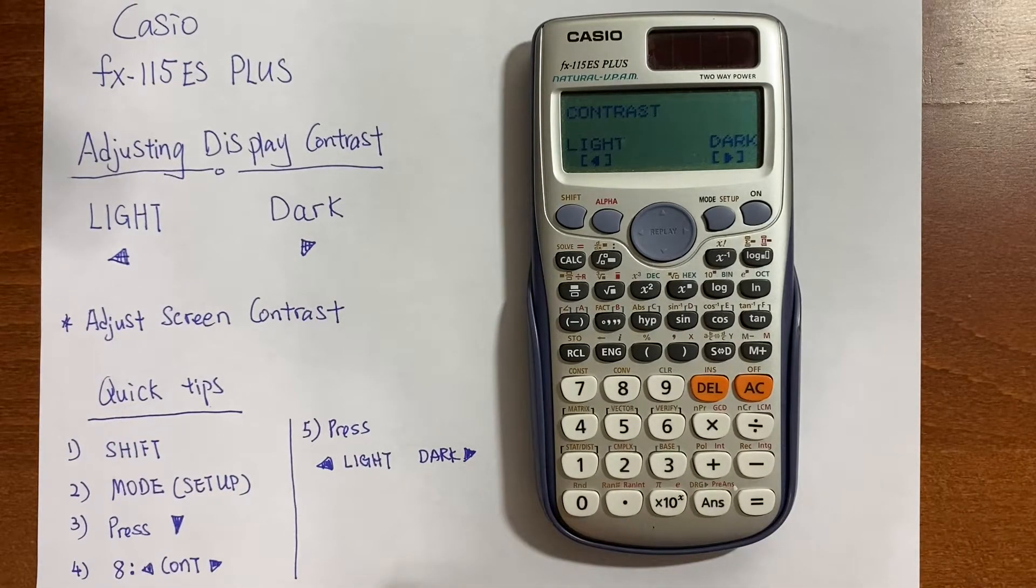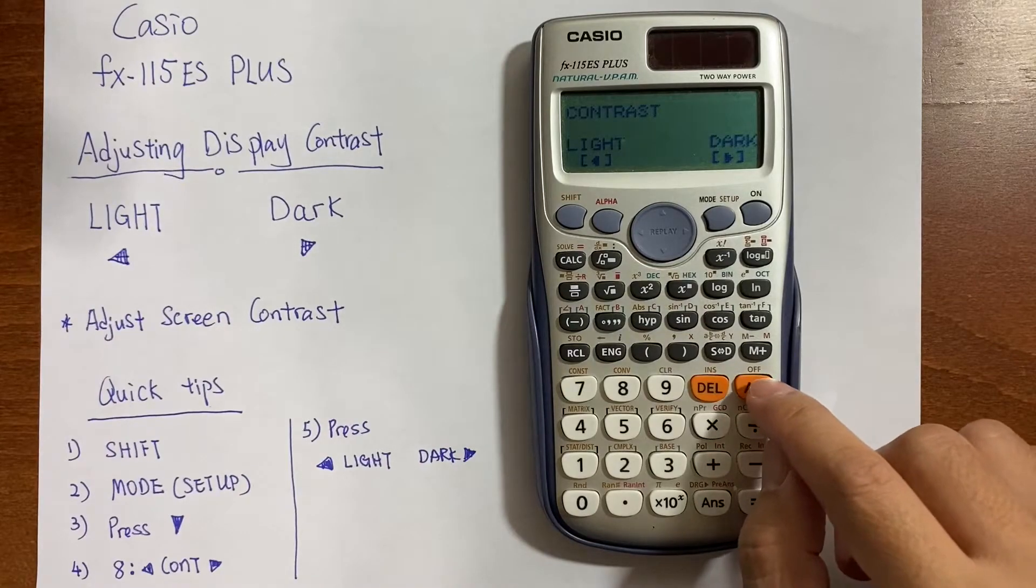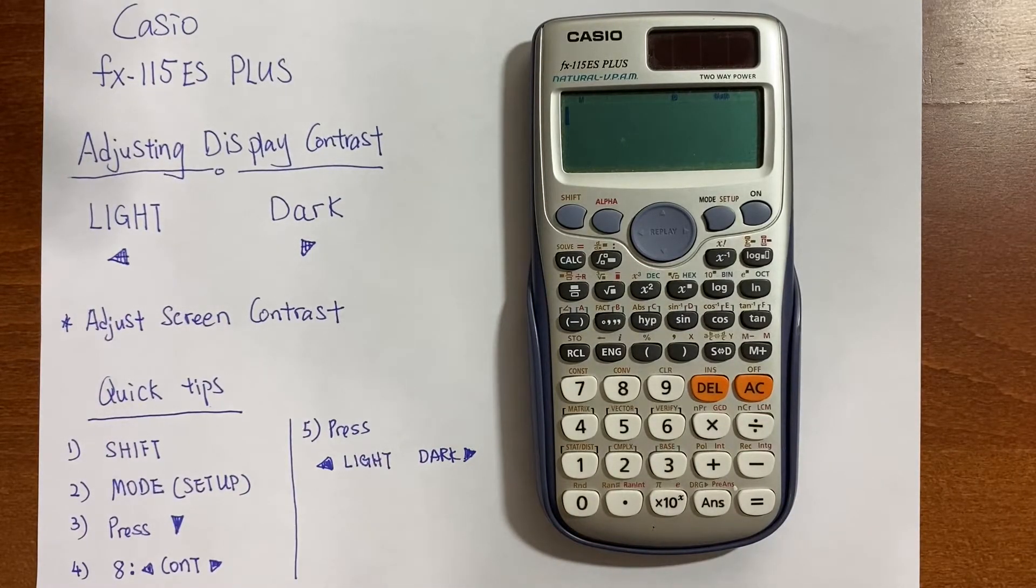When you're done selecting your contrast adjustment, just press off and that will bring you back to the menu. So let's come back to the quick tips.